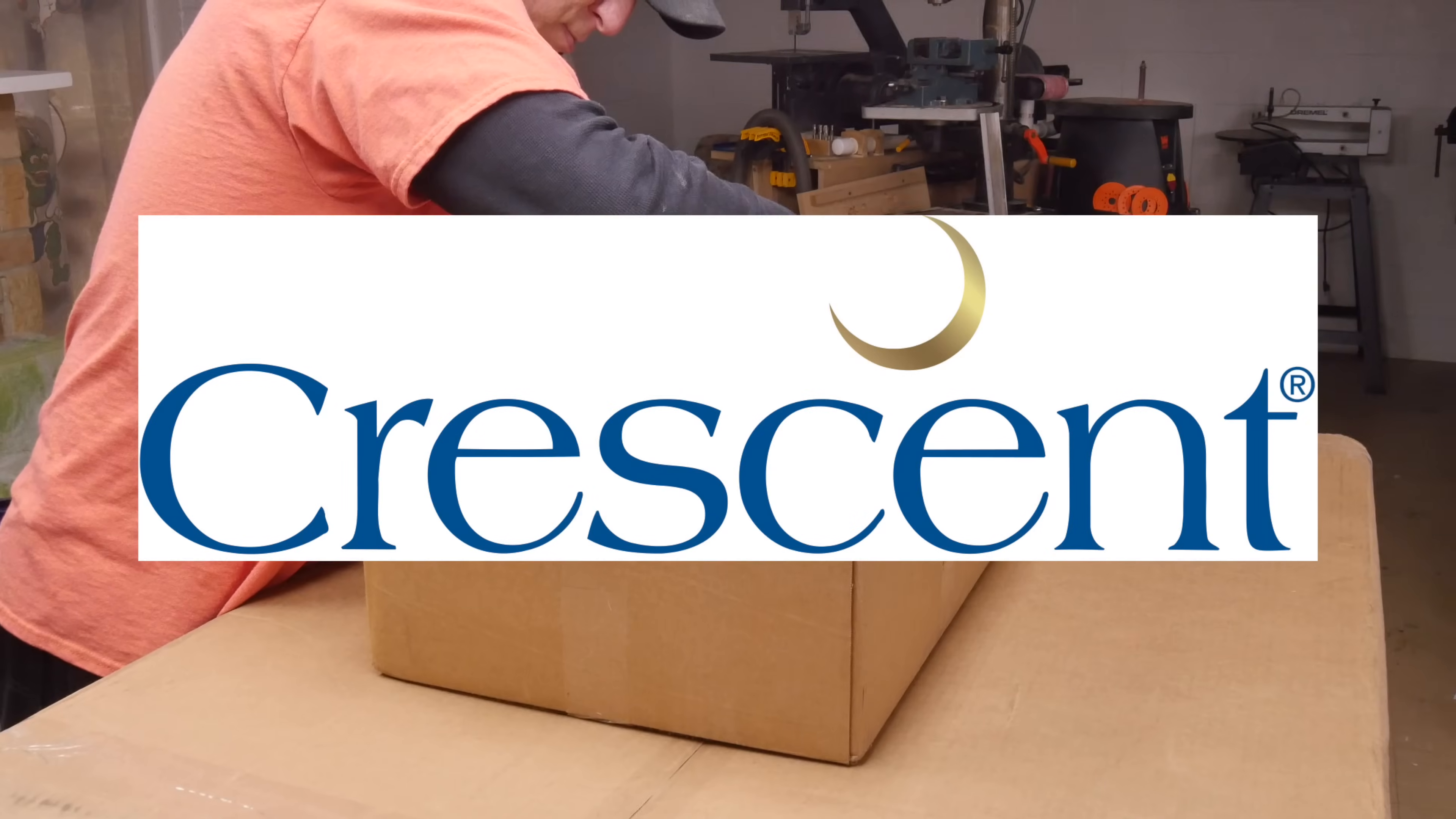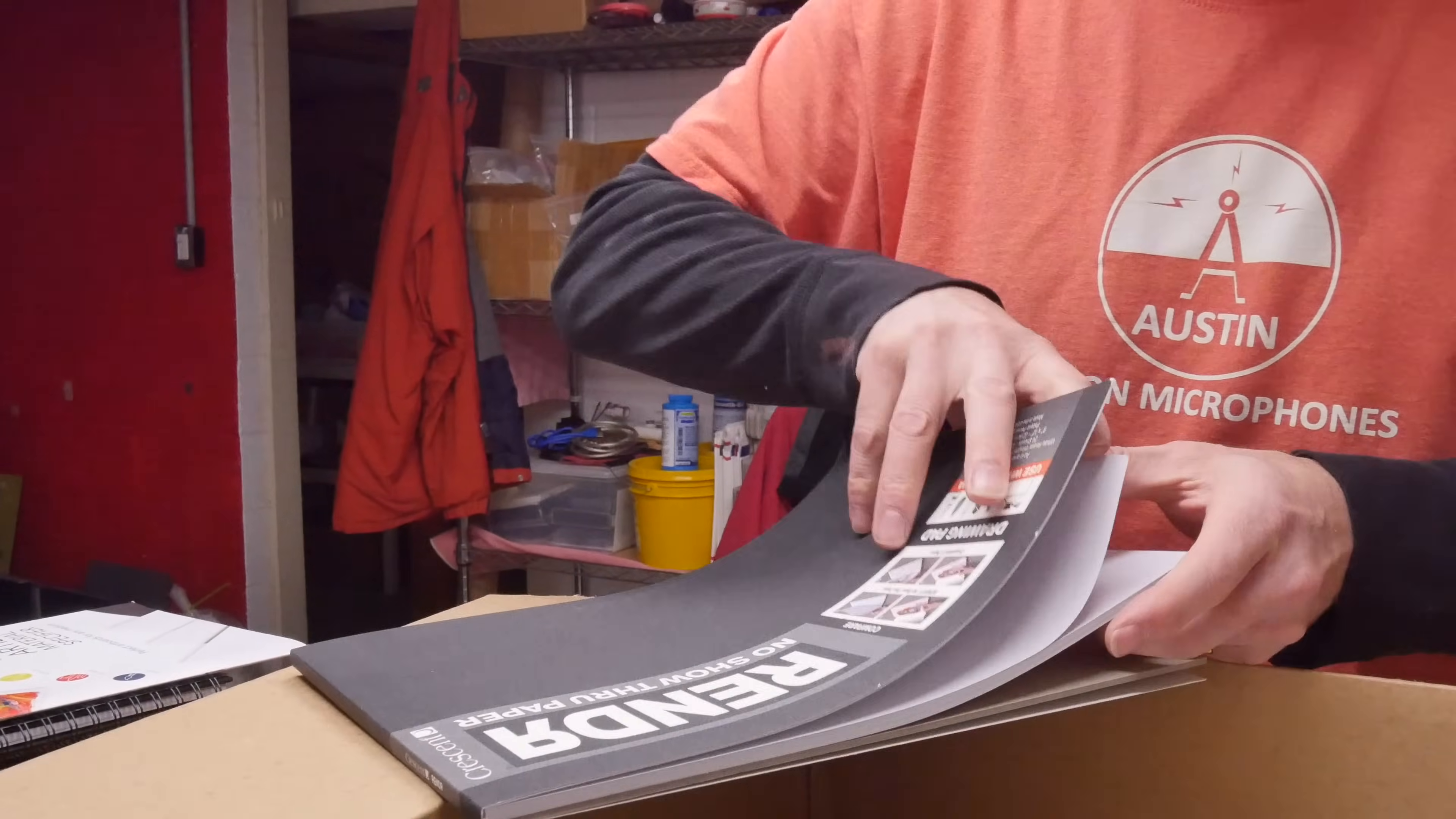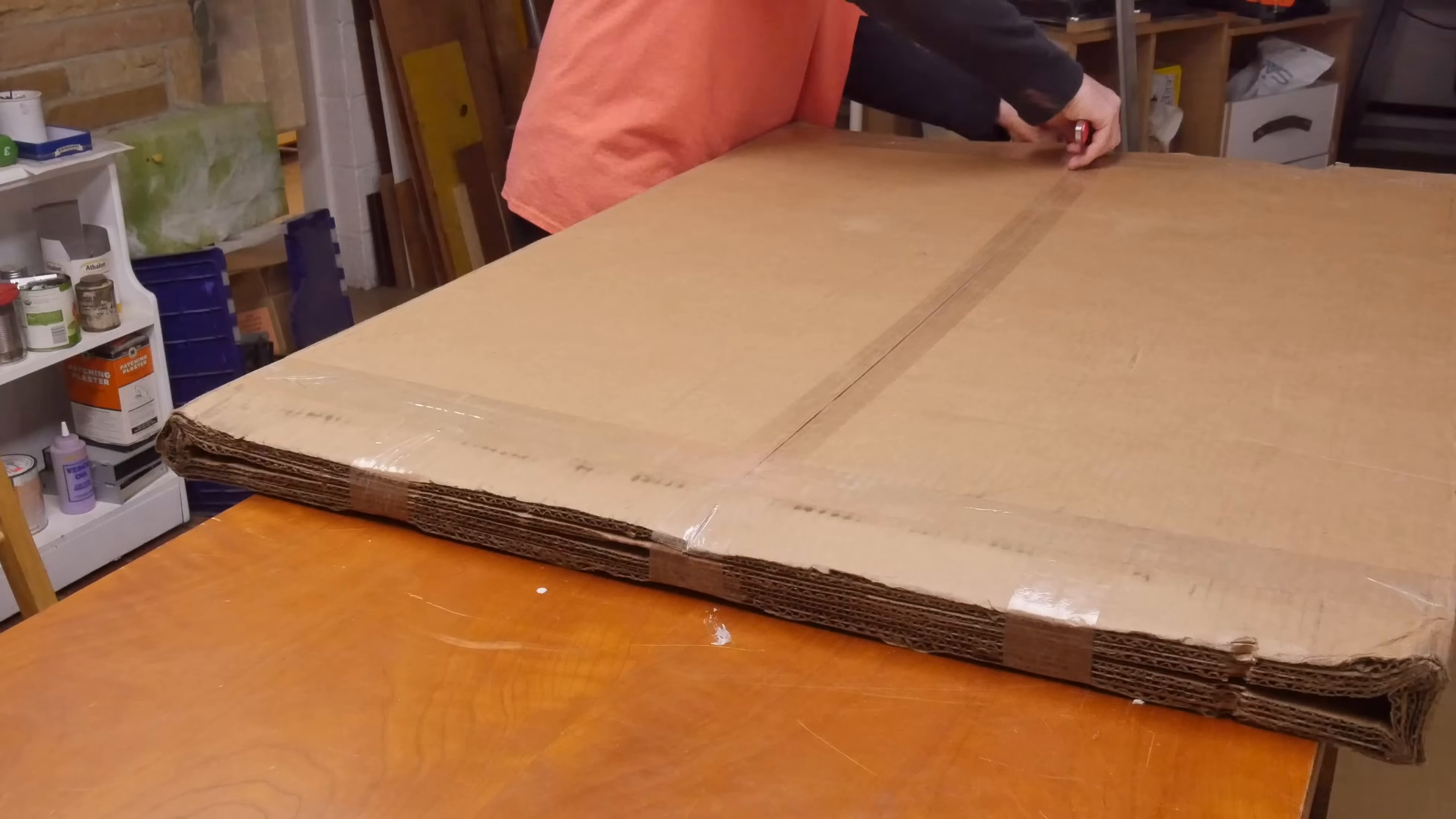This video is sponsored by Crescent Cardboard, Crescent Manufacturing materials for creatives for five generations in the Chicagoland area since 1902. After the first cardboard video in the series, Crescent reached out and sent me a bunch of stuff. Here I am unboxing all the mat boards, sketch pads, and artist paper.